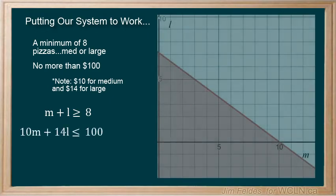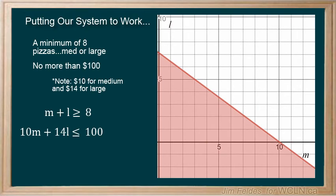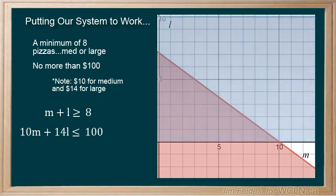And 10m plus 14l is less than or equal to 100, showing the restriction on spending. We have placed l on the vertical axis and m on the horizontal, and need only focus on the first quadrant.